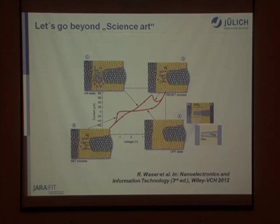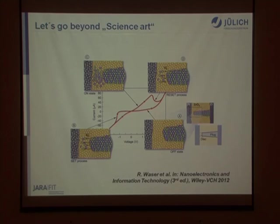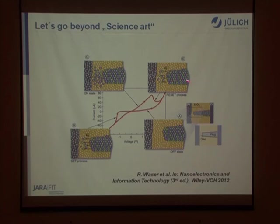where a change of the valence in the material leads to bipolar resistive switching. Let me show this sketch about how, in a simple way, we think this effect occurs. This is a kind of science art from one of our latest books from Rainer Wasser. This is a simplified picture of resistive switching in zirconium oxide, which can be very similar for all other binary oxides. The idea is that during the forming process, we form a filament in the material which is already in a reduced state.